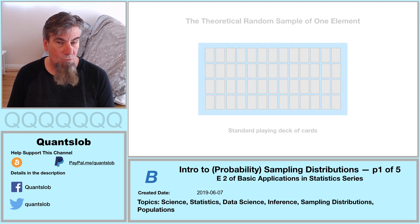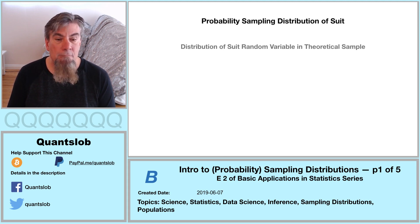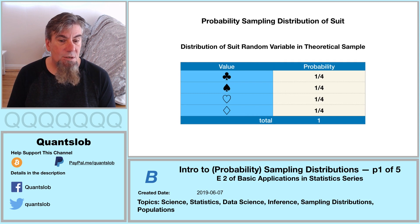The card, whatever card we select, would occur with certainty. So this is here the probability sampling distribution of our suit value in our theoretical random sample of size one. This is sort of where we left off in our foundational series finale, but it's good to revisit. And what comes next involves a bit of a leap.